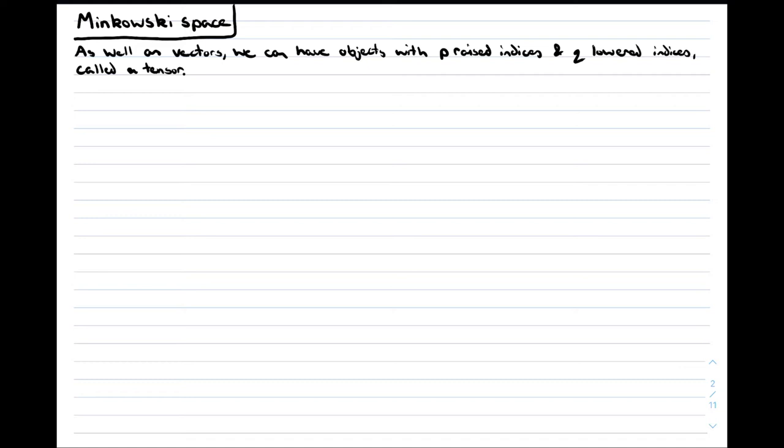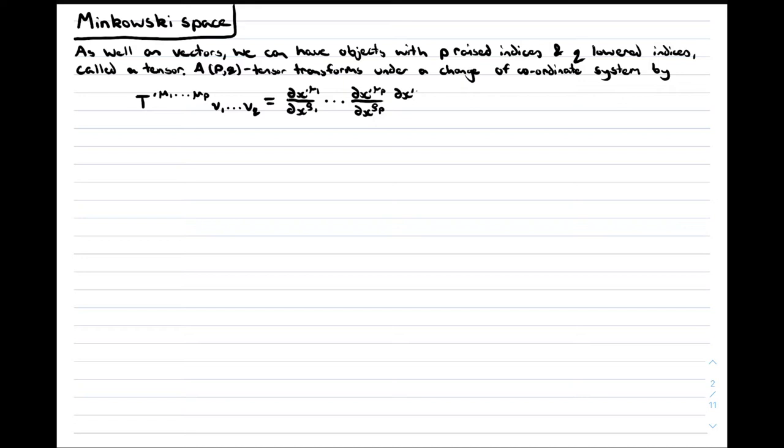As well as vectors, we can have objects with p-raised indices and q-lowered indices called p-q tensors, where p and q are both positive integers. The transformation law for a component of a vector is simply the components being multiplied by the Jacobian matrix for the change of coordinate system. A p-q tensor transforms under a change of coordinates by having one factor of the Jacobian and one factor of the inverse Jacobian for each raised or lowered index respectively.